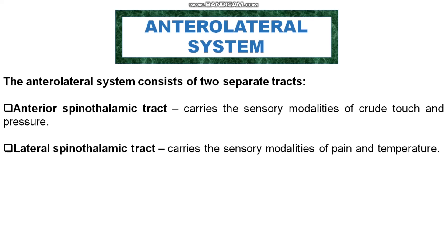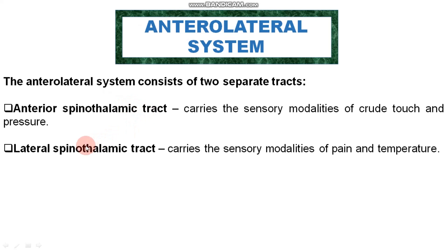The anterolateral system is a major spinothalamic tract. The spinothalamic tract, as the name suggests, ascends from the spinal cord to the thalamus of the brain. The anterolateral system consists of two spinothalamic tracts: the anterior spinothalamic tract and the lateral spinothalamic tract.